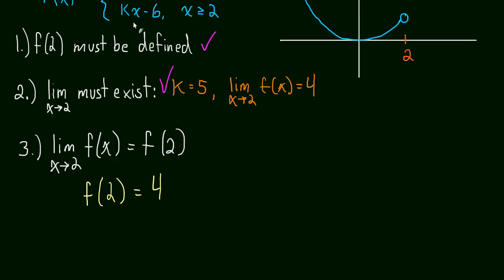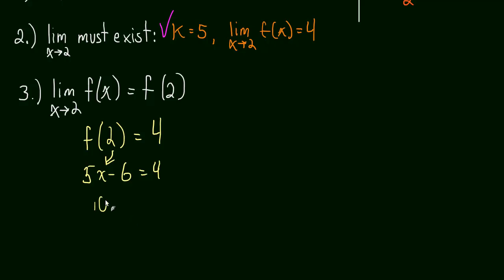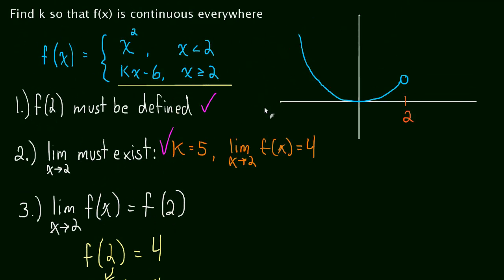So, what is f of 2? Well, we plug it into our line. And that's up here. So, we know k is 5. So, now we just have to do 5x minus 6 is equal to 4. But it's not just x. We plug the 2 in. And we end up with 10 minus 6 is equal to 4. 4 is equal to 4. So, the limit and the function are equal. Check that off.